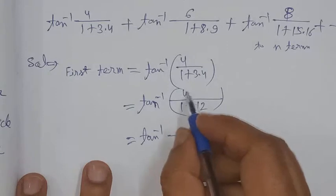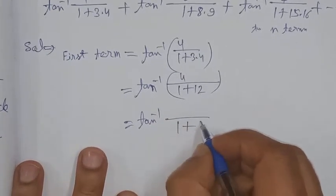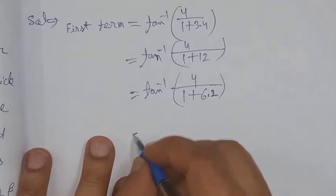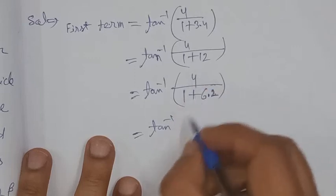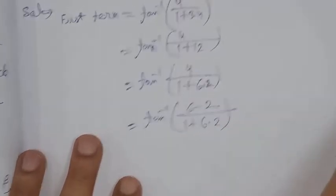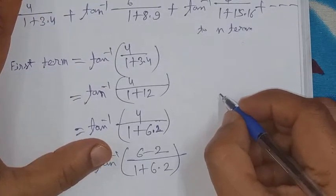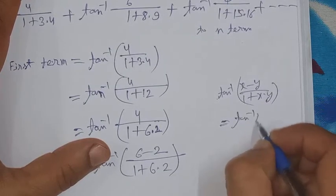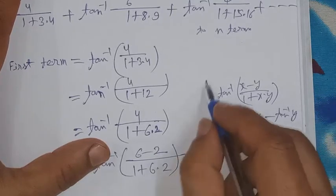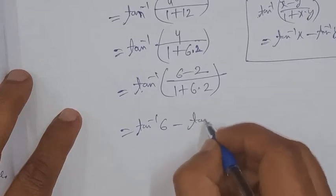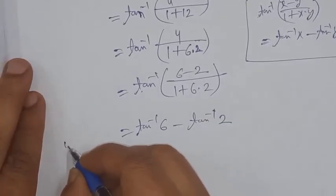There are two factors here, and the difference between them is 4. So we can write 2×12, and rearrange: the numerator is 6 minus 2, giving us tan⁻¹((6-2)/(1+6·2)). Using the identity tan⁻¹x - tan⁻¹y = tan⁻¹((x-y)/(1+xy)), the first term equals tan⁻¹6 - tan⁻¹2.